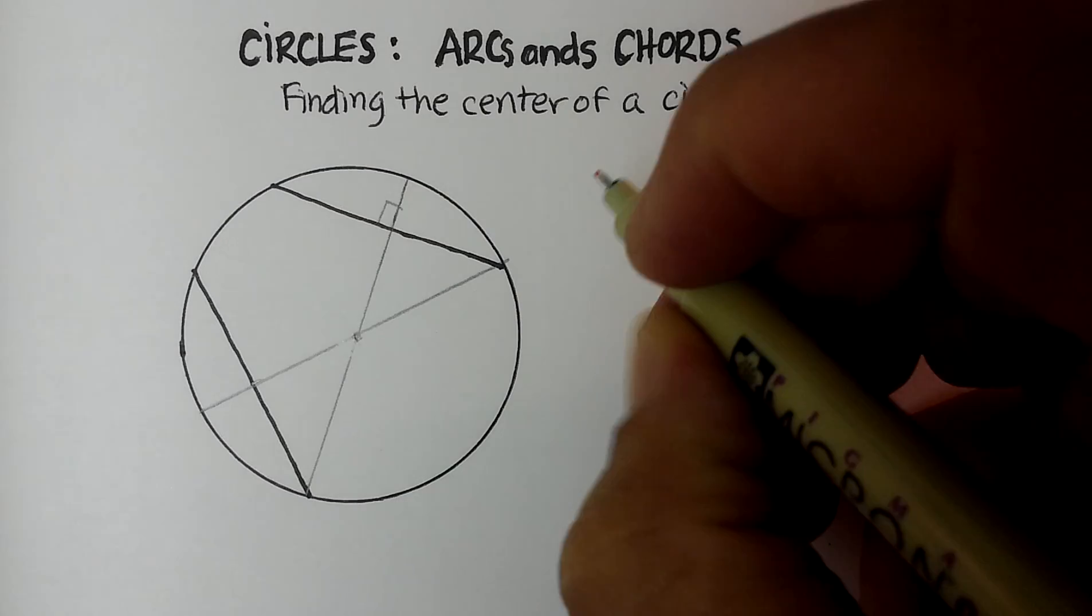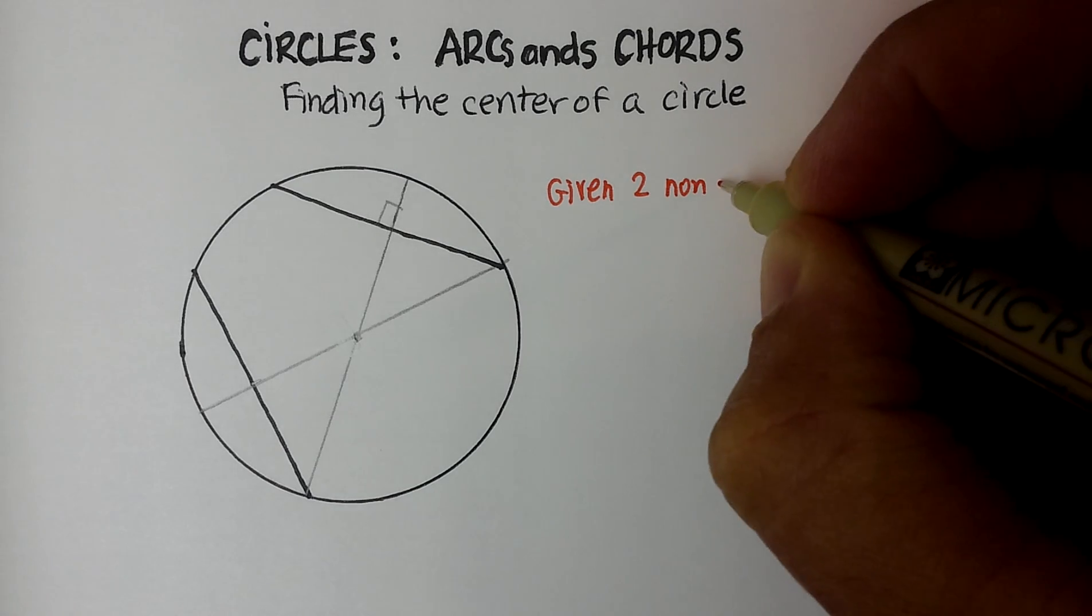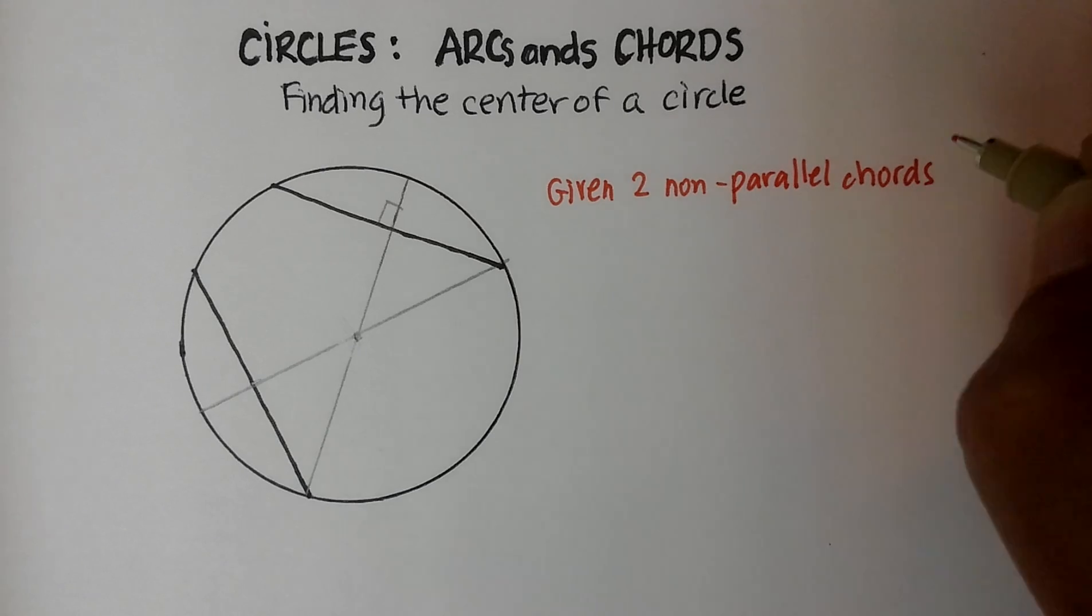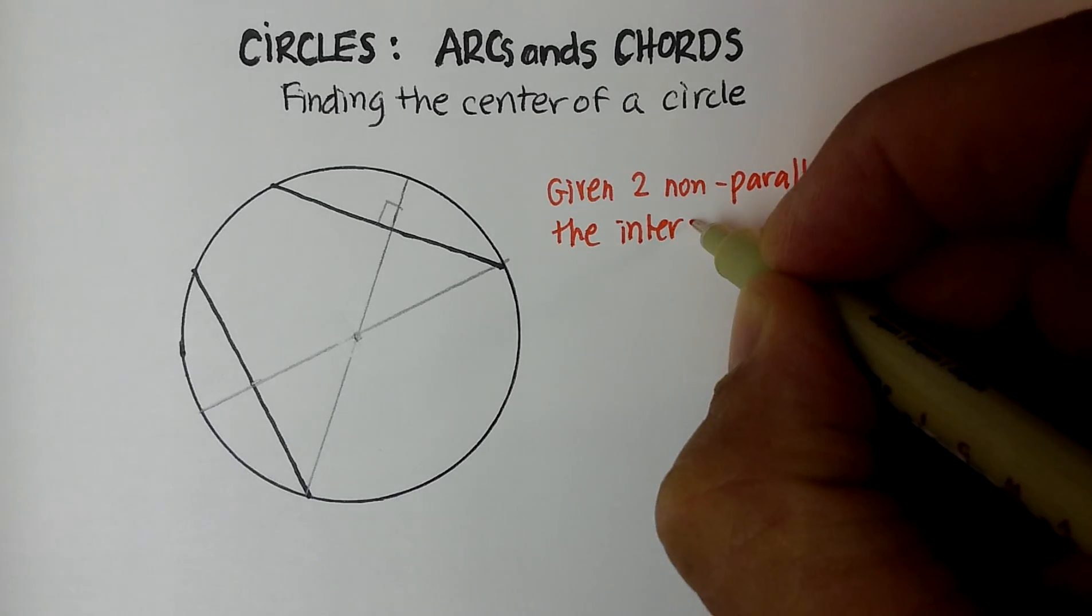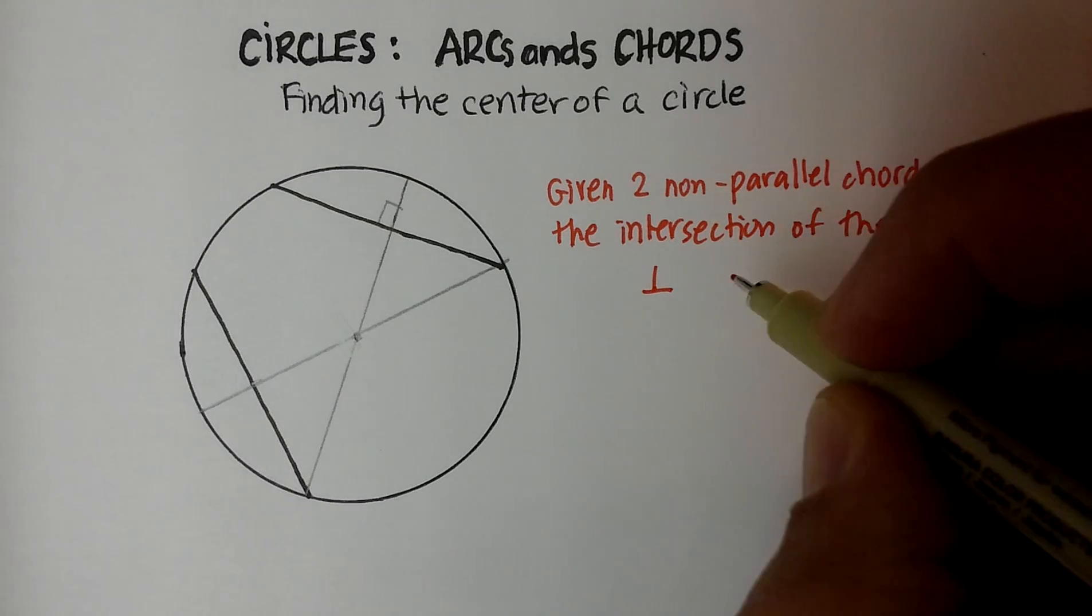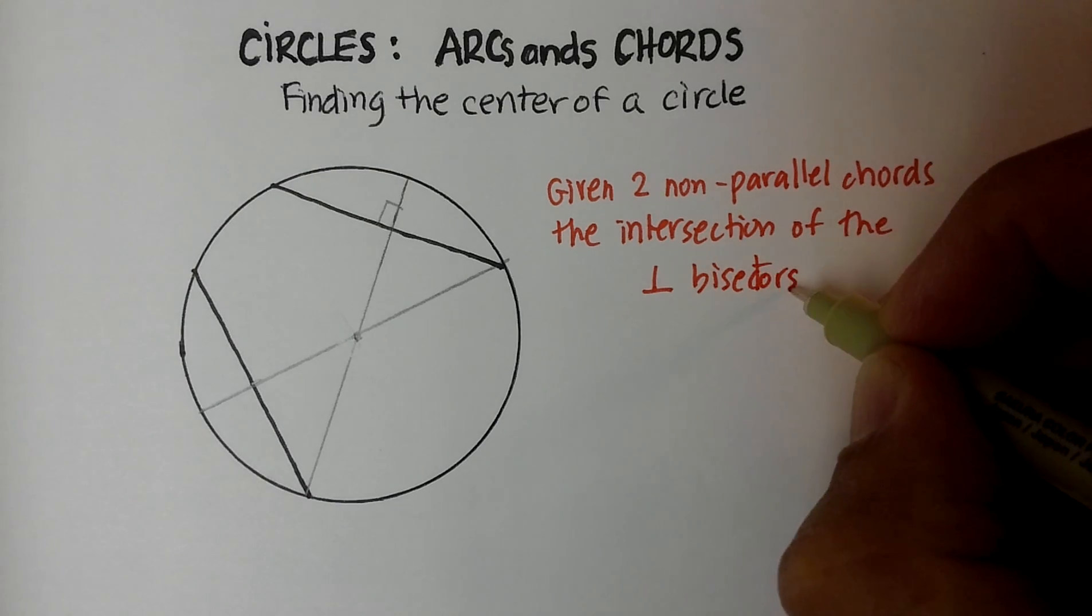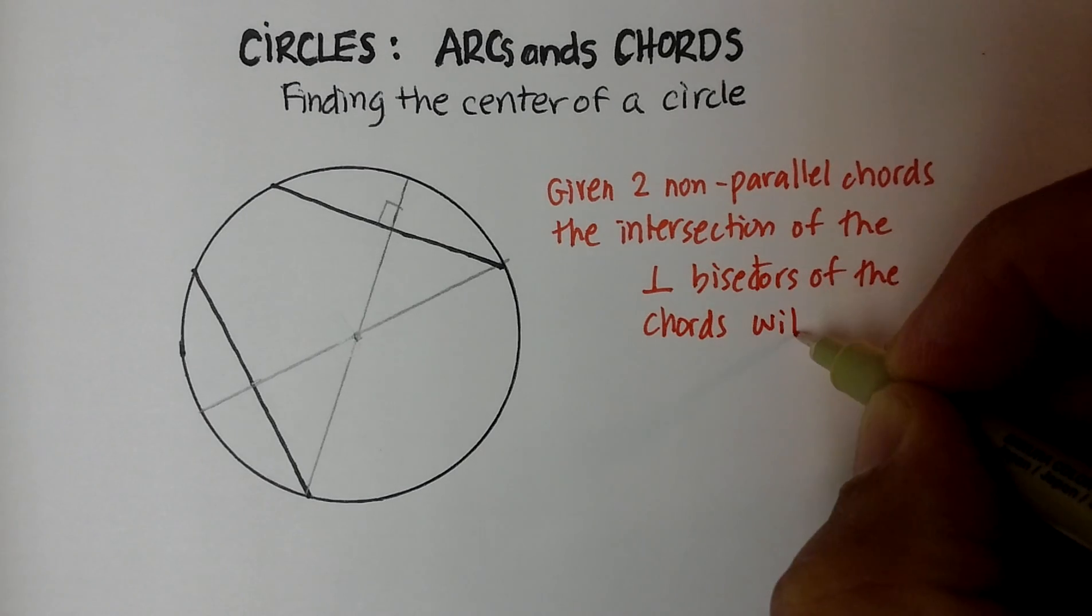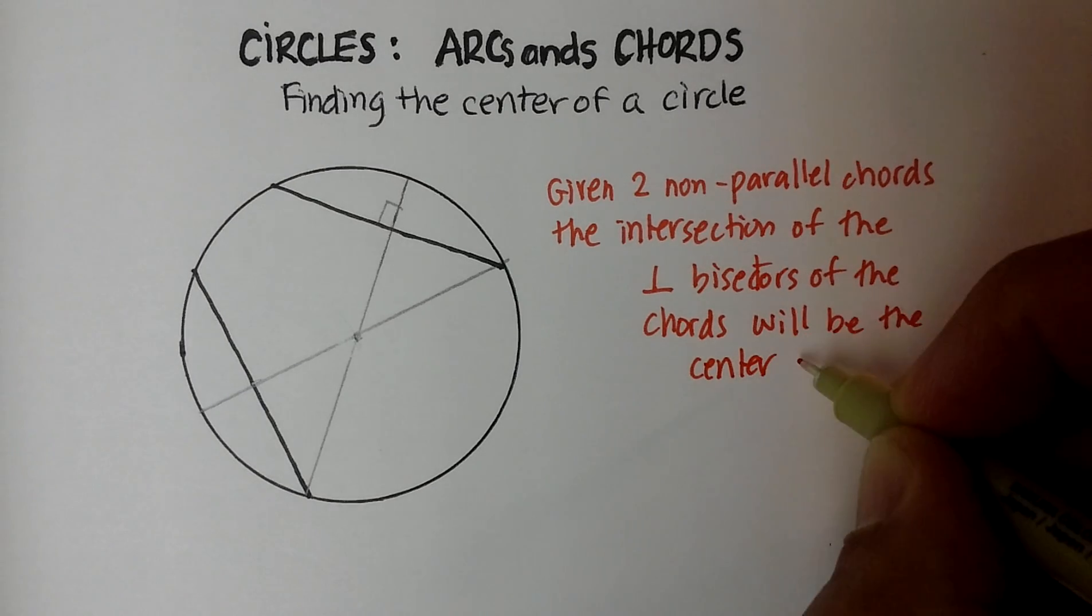So, given two non-parallel chords in a circle, the intersection of the perpendicular, remember this is a symbol for perpendicular bisectors. Bisectors of the chords will be the center of the circle.